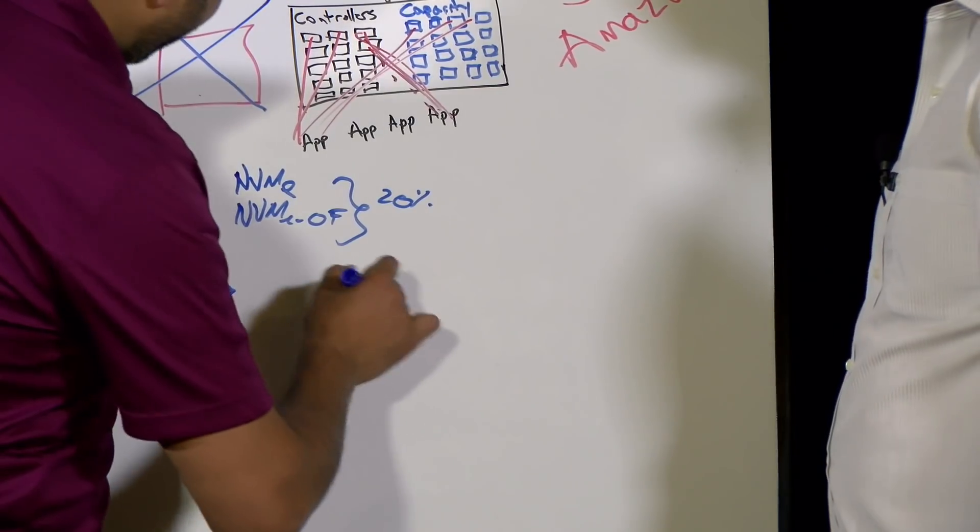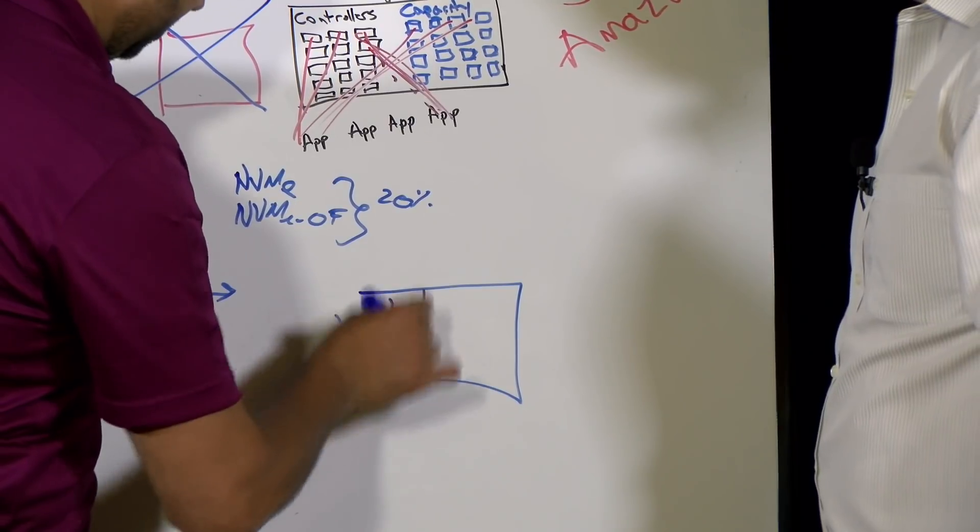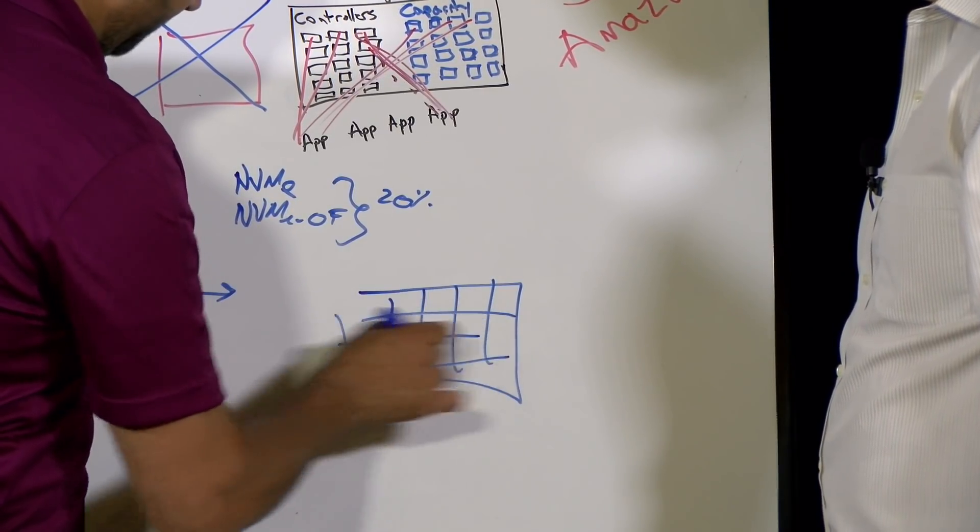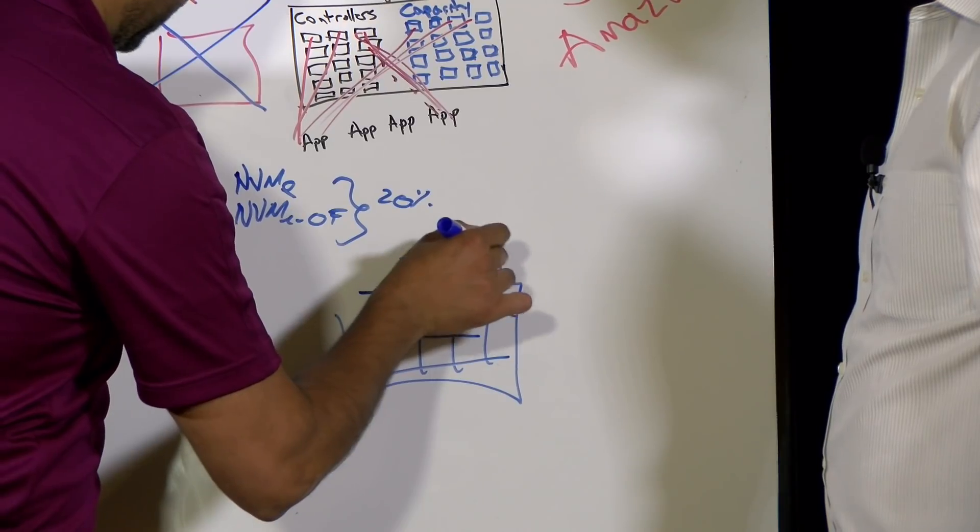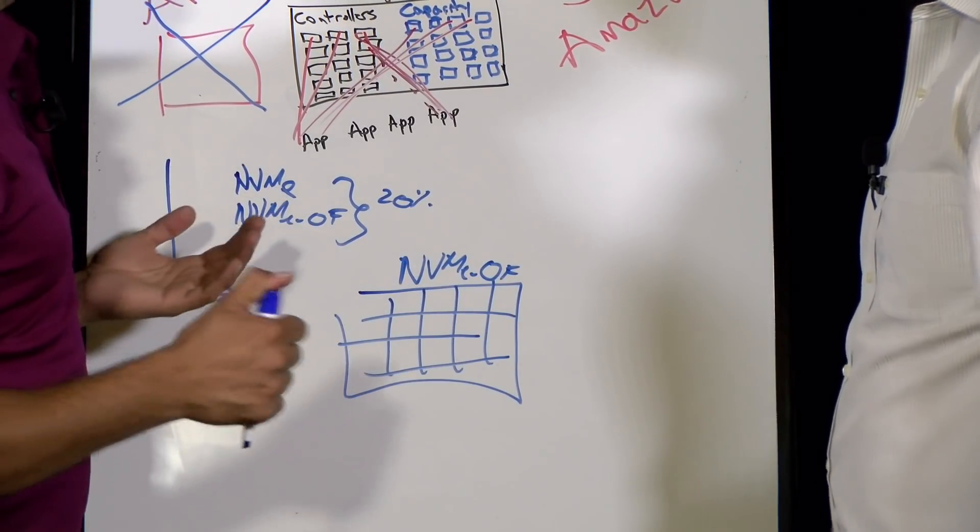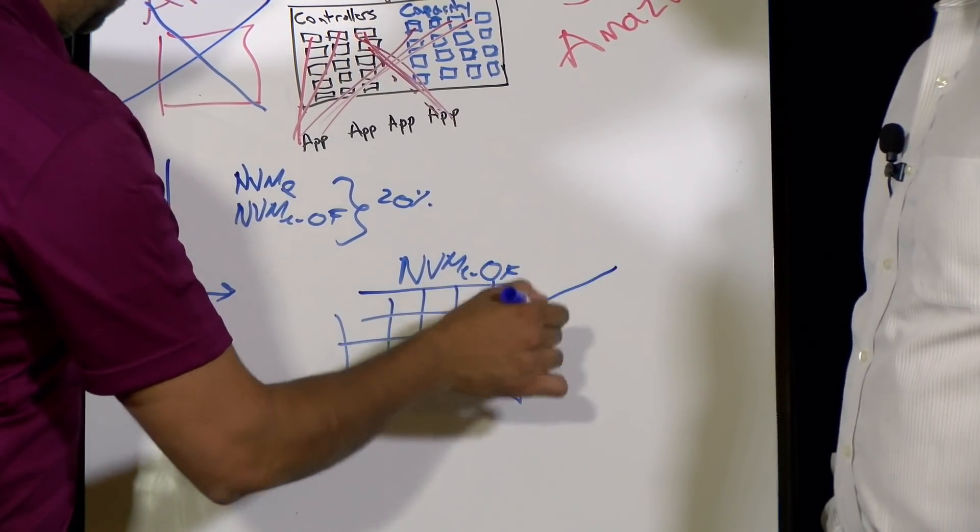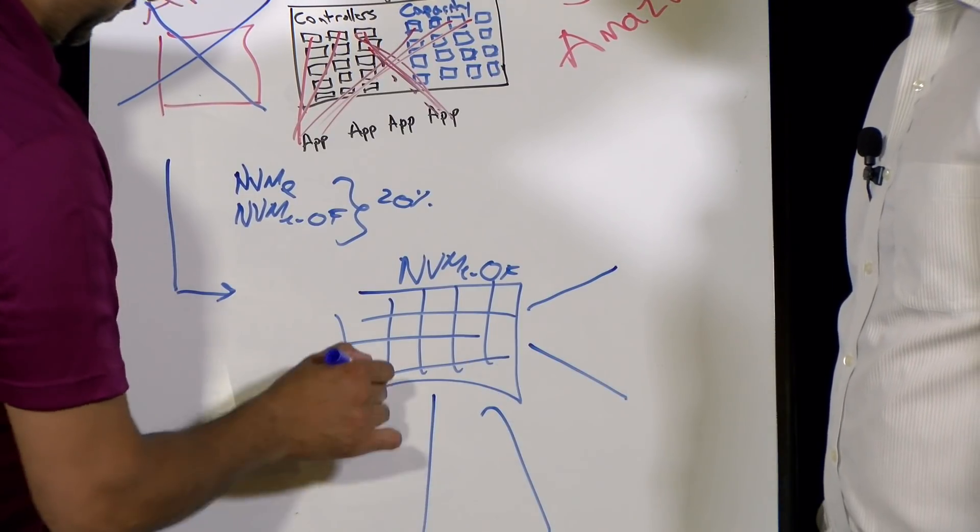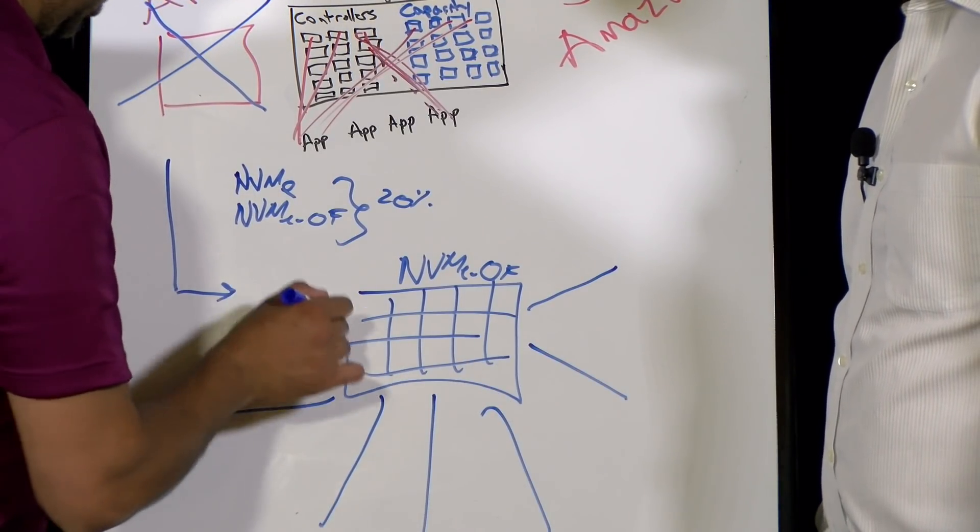All of them over this high-speed network that they can be dynamically resourced for applications as you mentioned. So basically my mesh here, the behind the scenes there could be NVMe. Exactly. So if I were to draw this out, this is my mesh of NVMe. This is my NVMe mesh, either over Fabrics or over Fiber Channel.